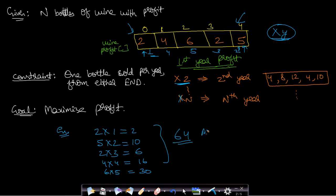This is the maximum profit — 64. If you sell these items according to the given constraints, the maximum profit will be 64; you can't get more than this. Our question is to find this maximum profit, and a secondary question is to find the sequence in which you sell. Let us see how to solve it using recursion.